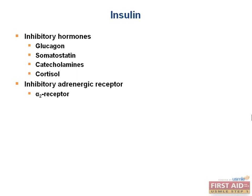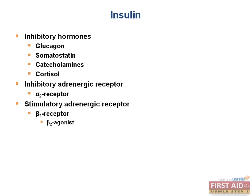Conversely, the beta-2 adrenergic receptor, when stimulated, will increase insulin release. You could be tested on this by being given a patient with symptoms of hypoglycemia due to the side effect of a medication — look for beta-2 agonist drugs. A good example is an asthmatic using significant amounts of albuterol, which is a beta-2 agonist. On the other hand, growth hormone — produced by acidophils of the anterior pituitary gland — stimulates insulin release.